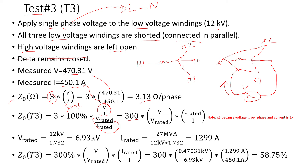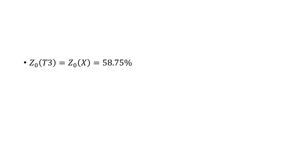Since I'm applying single-phase voltage to the 12 kV low-voltage winding, the phase voltage is 12 kV divided by √3, which gives 6.93 kV line-to-neutral. The winding is rated 27 MVA, so I calculate the rated current. Plugging in the numbers — converting volts to kV so units cancel — the amps cancel as well, and I get 0.75%. I'm noting this value because I'll need it later to build a T-model.